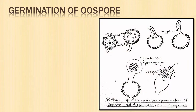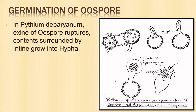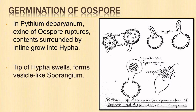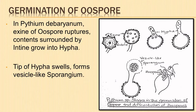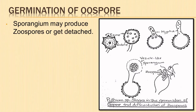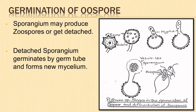During germination of the oospore in Pythium debaryanum, the exine of the oospore ruptures and the contents surrounded by the delicate intine grow into a hypha. The tip of the hypha swells and forms a vesicle-like sporangium into which the entire protoplast migrates. The terminal sporangium may produce zoospores or get detached; the detached sporangium germinates by forming a germ tube and later develops into a new mycelium.